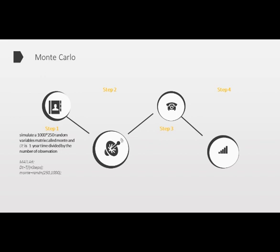First, we need to simulate a 1000 by 250 random matrix of standard normal random variables to obtain the paths of epsilon, which represents the white noise we mentioned before. Delta t is equal to the time — usually one year — divided by the number of observations. Second, we multiply the random matrix from step 1 by sigma times the square root of delta t, and add another term from Black-Scholes' function to it. We successfully simulate the logarithmic price of stocks at each certain time t.